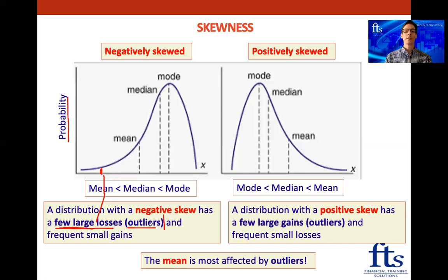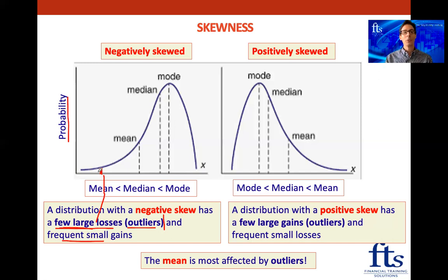In a negatively skewed distribution there are frequent small gains - their probability is high. Be careful with exam questions: if they say there are many large losses in a negatively skewed distribution, that is wrong - there are only a few large losses. And if they say there are a few small gains, that is also wrong - there are frequent small gains.